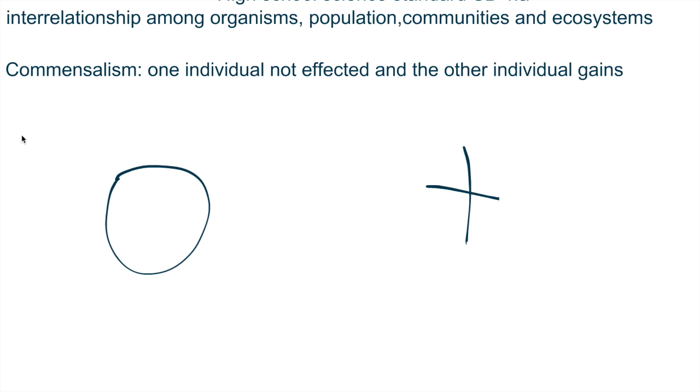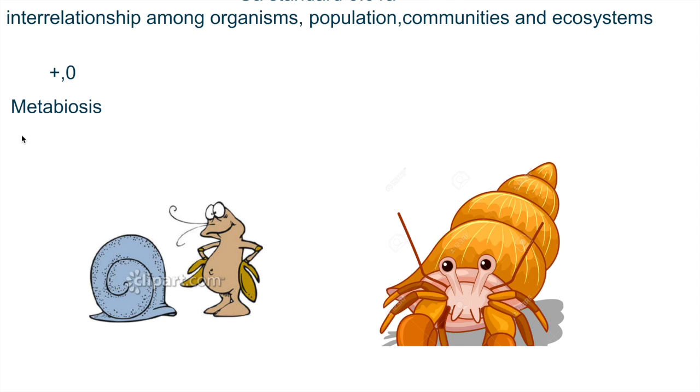Three examples of commensalism today. The first one we're going to talk about is metabiosis. Metabiosis is an example that is a hermit crab, a hermit crab with a shell.